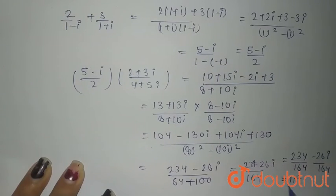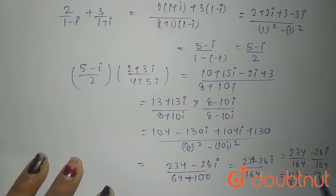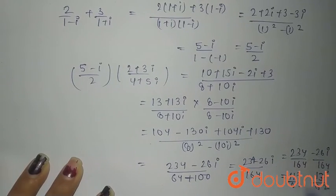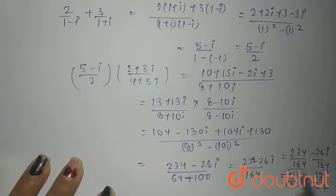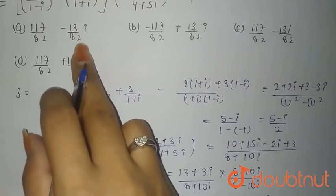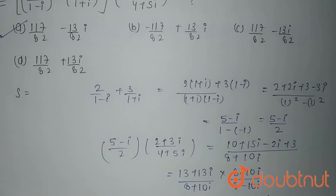Which is nothing but multiplying and dividing by 2 is 117 divided by 82, that means dividing by 2 minus 13 iota divided by 82 which is your answer and option A. That is 117 divided by 82 minus 13 divided by 82 iota is your correct option. I hope it's clear. Thank you.